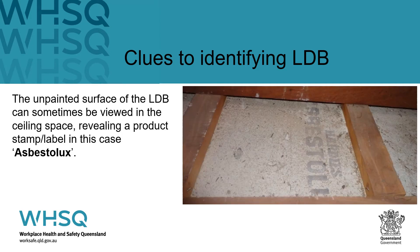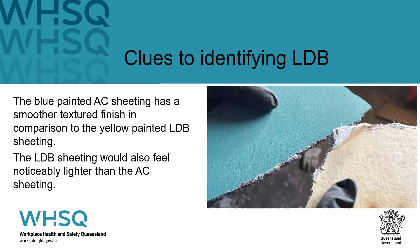The unpainted rear surface of LDB sheeting can sometimes be viewed in areas such as ceiling spaces, which can often reveal the product name or label. The blue-painted AC sheeting has a smoother textured finish in comparison to the yellow-painted LDB sheeting. The LDB sheeting would also feel noticeably lighter in comparison to the AC sheet.